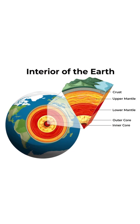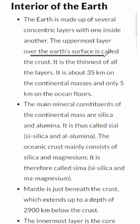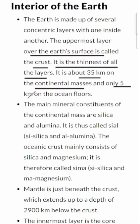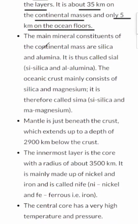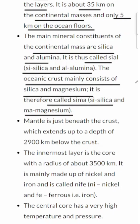Let's delve into the layers inside Earth. Starting at the top, we have the Earth's crust — the outermost layer that covers the Earth's surface. It's relatively thin, measuring about 35 km under the continents and only 5 km beneath the ocean floors. The continental crust is rich in silica and alumina, so scientists call it SIAL — SI for silica and AL for alumina. Meanwhile, the oceanic crust is mainly made up of silica and magnesium, earning it the name SEMA — SI for silica and MA for magnesium.